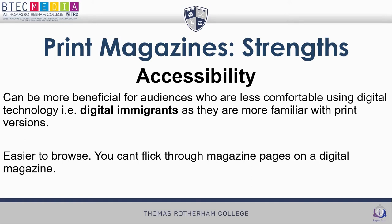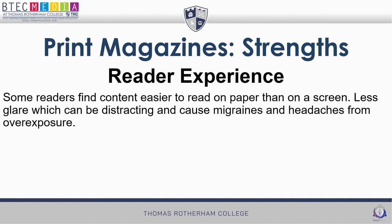Print magazines are more beneficial for audiences who don't like using digital technology — digital immigrants are more familiar and comfortable with them. Also, digital magazines are not easy to browse. You can't just flick through pages randomly to find an article — you have to scroll through every single page one at a time. In a magazine like Vogue with around 400 pages, that takes a long time, whereas with a physical copy you can flip through easily.